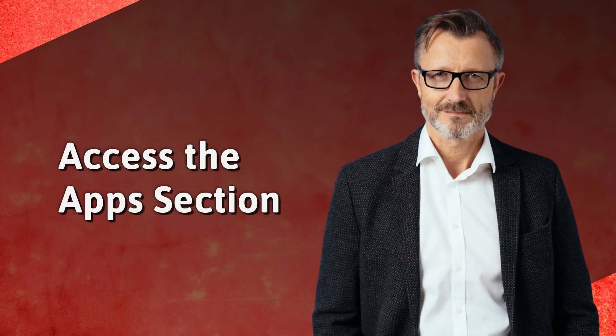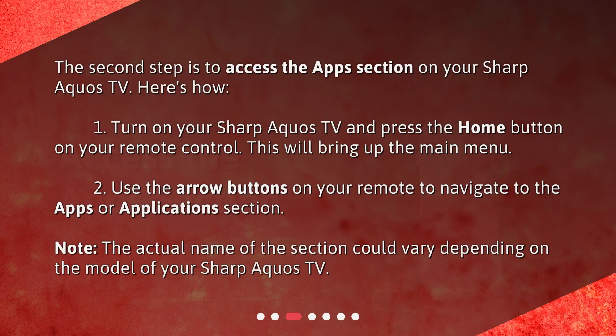Access the Apps section. The second step is to access the Apps section on your Sharp Aquos TV. Here's how: 1. Turn on your Sharp Aquos TV and press the Home button on your remote control. This will bring up the main menu. 2. Use the arrow buttons on your remote to navigate to the Apps or Applications section. Note: the actual name of the section could vary depending on the model of your Sharp Aquos TV.